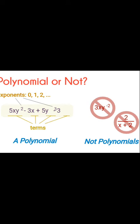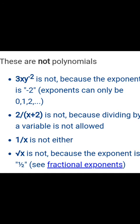A polynomial is NOT valid if the power on the variable is negative, a fraction, or a decimal. For example: 3xy^(−2) is not a polynomial because the exponent is minus 2. Similarly, 2/(x+2) is not a polynomial because division by variable is not allowed. 1/x and √x are also not polynomials, because √x means x^(1/2).